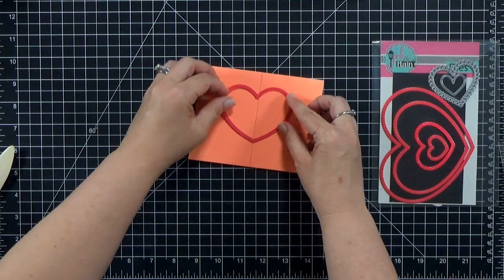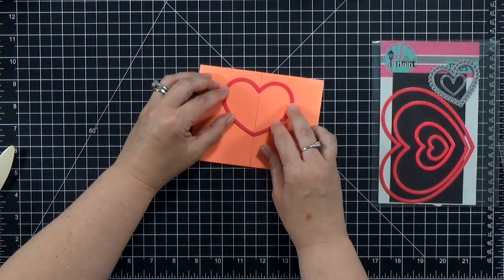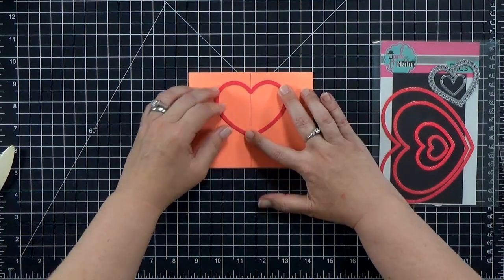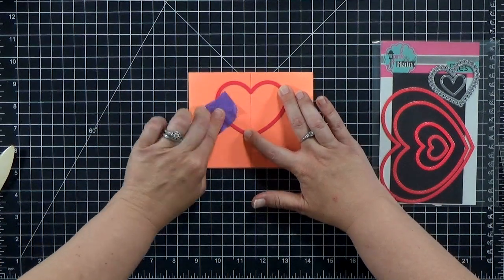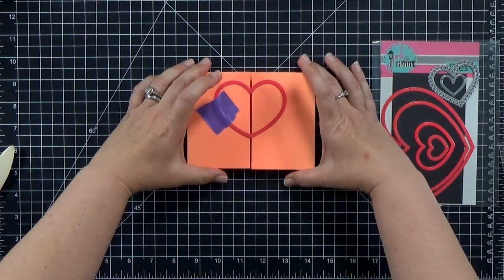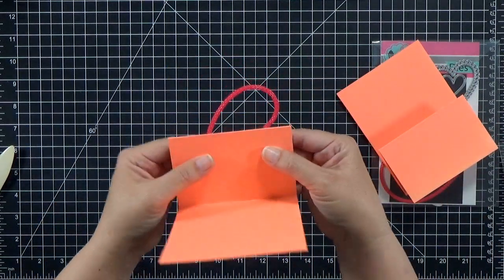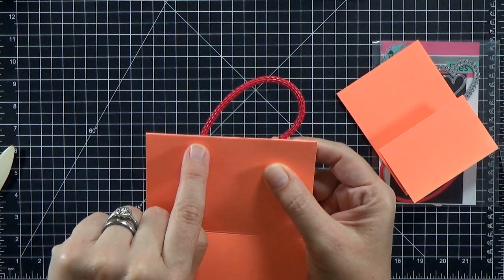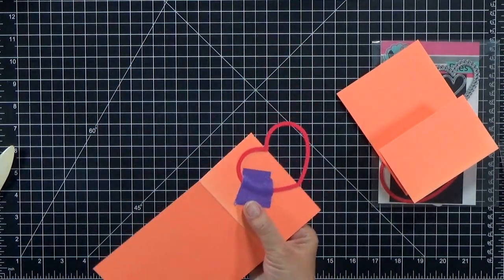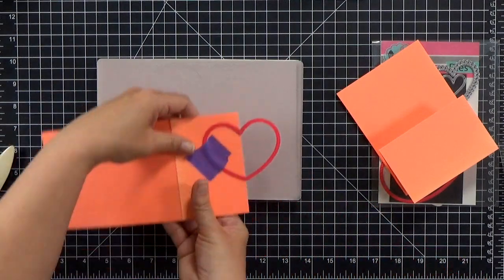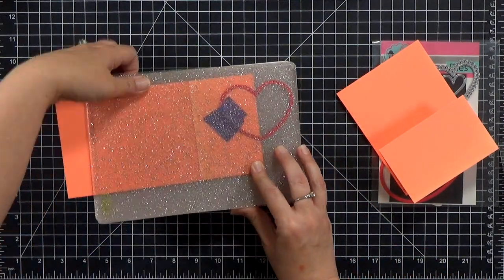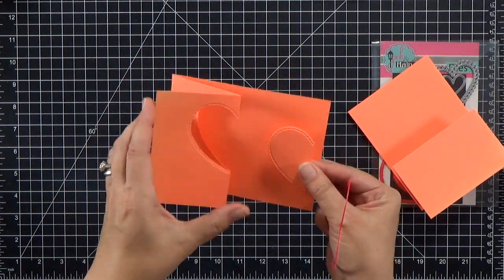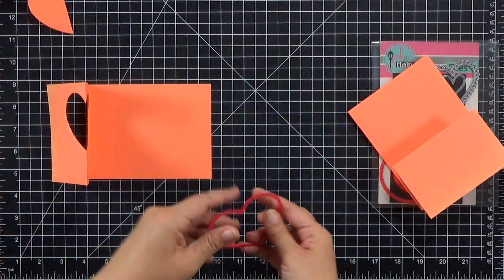And then I'm going to grab the middle heart there. That one's the third largest or third smallest. There's five in the set so it's the middle one. And I'm going to take it. I will line up those card pieces and I want to get that heart right in the center. And then I'm going to run it through my die cutting machine. And then you'll see that gives me half a heart. If I open it up I have a whole heart on the left side.